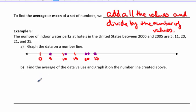Now part B, find the average of the data values and graph it on the number line. So let's find the average. To find the average, you want to add all the numbers up. 5 plus 11 plus 20 plus 21 plus 25. So if you add all those numbers up, you get 82.